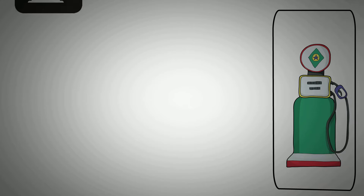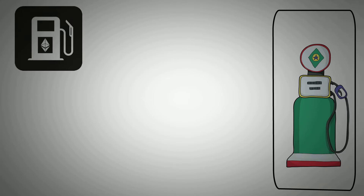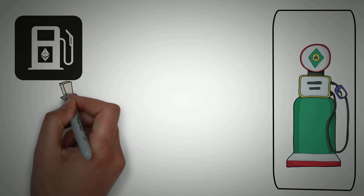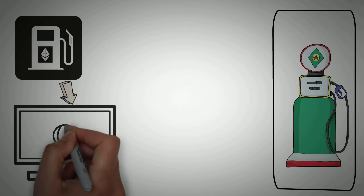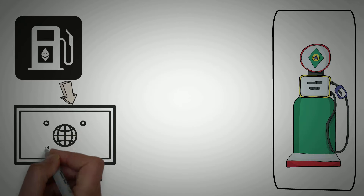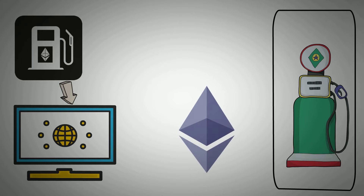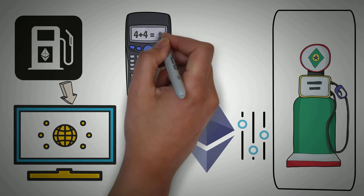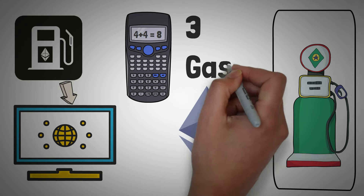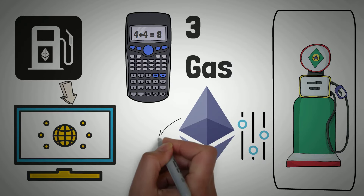It's called gas because it's similar to the gasoline that you put in your car — it is the fuel that powers the code and computations that happen on the Ethereum network. Ethereum is programmable money, and we have gas as a way to make sure that costs don't change even if the price of Ethereum skyrockets or plummets. It should always take 3 gas to add 2 numbers, whether the price of Ethereum is $200 or $20,000.